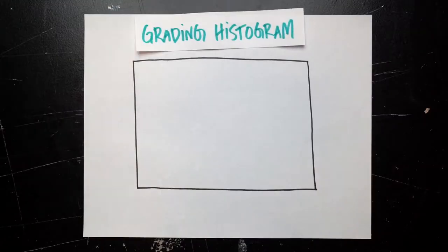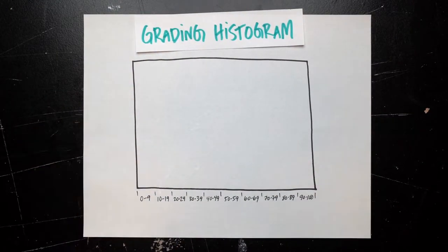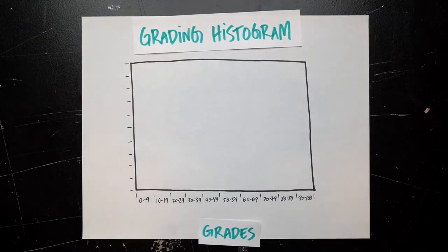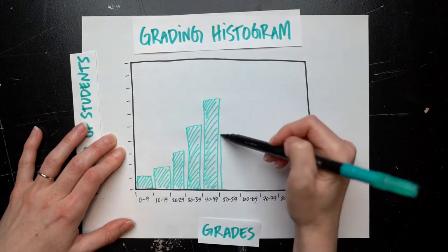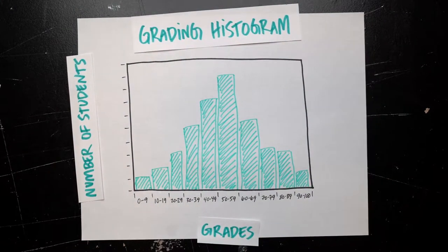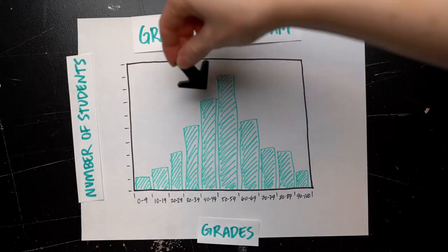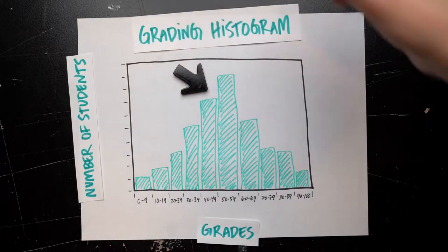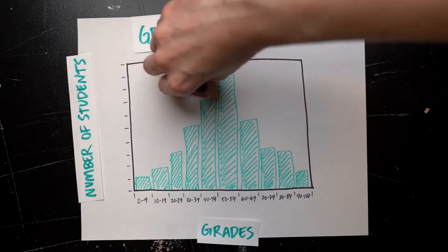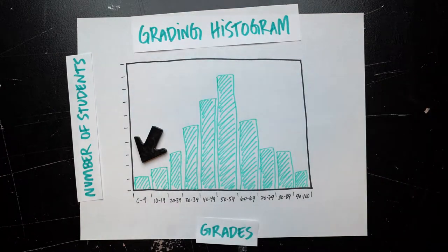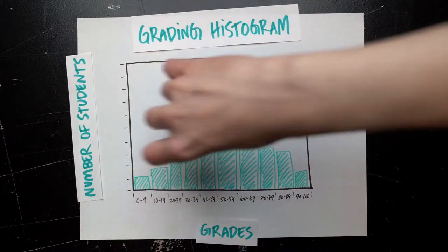Exposure tool number one is a histogram. A histogram is just a fancy name for a bar chart that shows how often something happens. Teachers will often use a histogram to show the grading curve — how many students got different grades — and most histograms look something like this, where we see the biggest number in the middle and only a few students on either end who got a really low or a really high score.